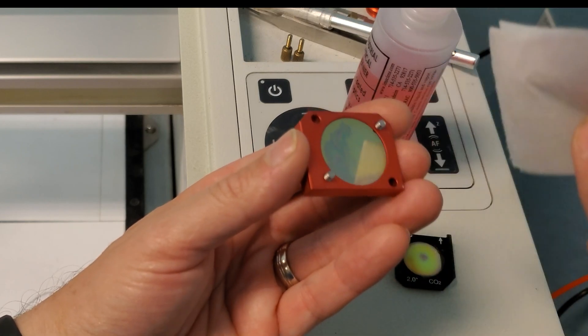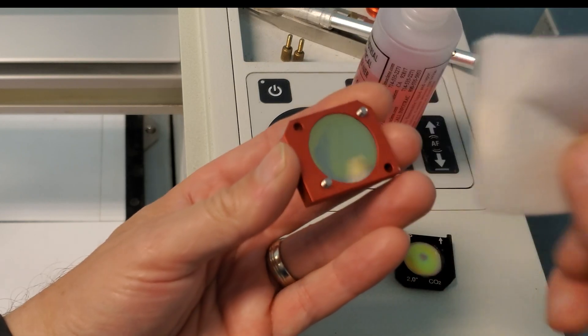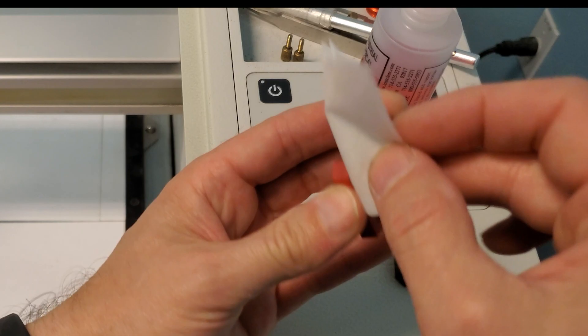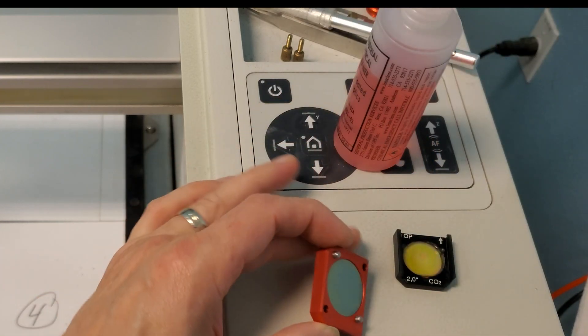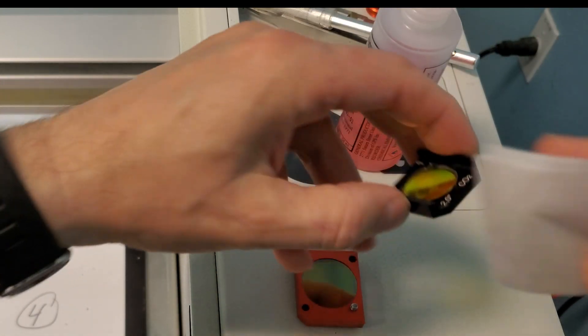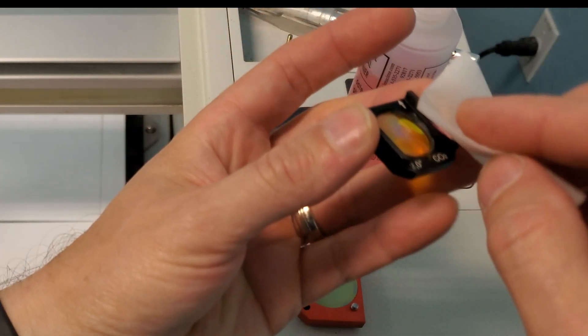I've seen videos from one laser manufacturer putting cleaning solution directly on the lens and wiping it in a constant circular motion. That seemed really excessive to me. I wipe only as much as necessary.